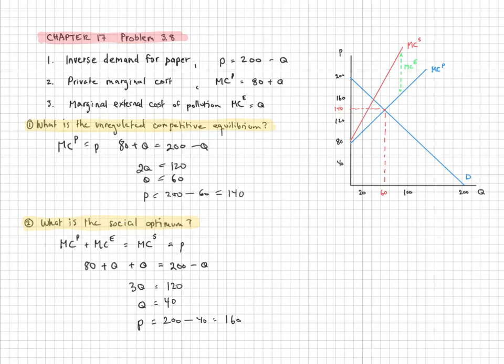Again, we can go and find that point in our diagram. So here's the marginal social cost equal to the demand curve. So here we see that our quantity is going to be 40 now, and our price is going to be 160. All right, so that's a socially optimal outcome.